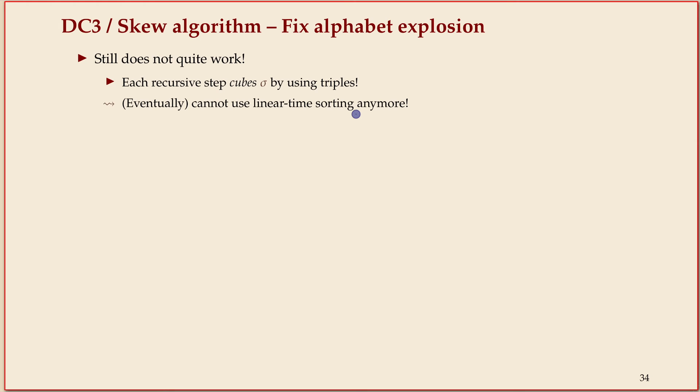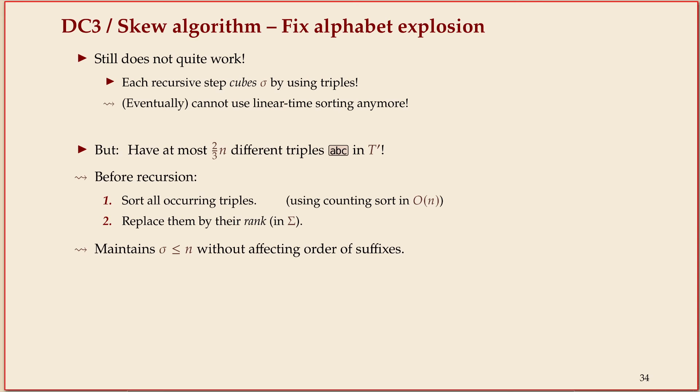Now of course, our actual string doesn't really get bigger. If we had 24 characters in the original string, we don't magically make up new characters. In particular, because this T prime has roughly length two-thirds of n in numbers of characters...